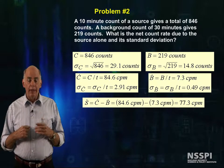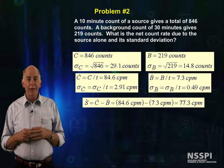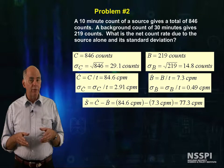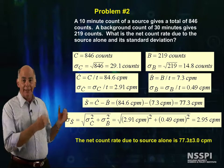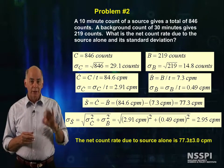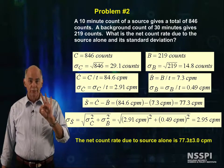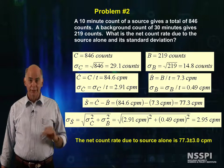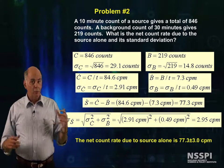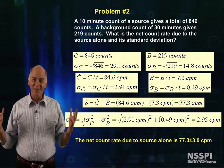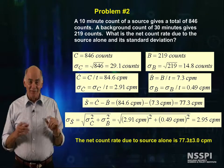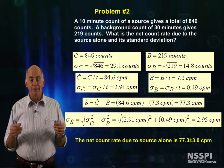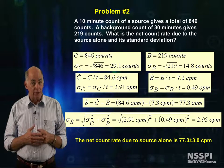Subtracting the background count rate from the gross count rate, we get 77.3 counts per minute. Using our error propagation formula, we get that the error in the net count is 3 counts per minute. And we've done it. You now know everything you need to know about statistics — well, sort of, maybe a little bit. And from here, we begin to do fun things. Let's go talk about detectors.